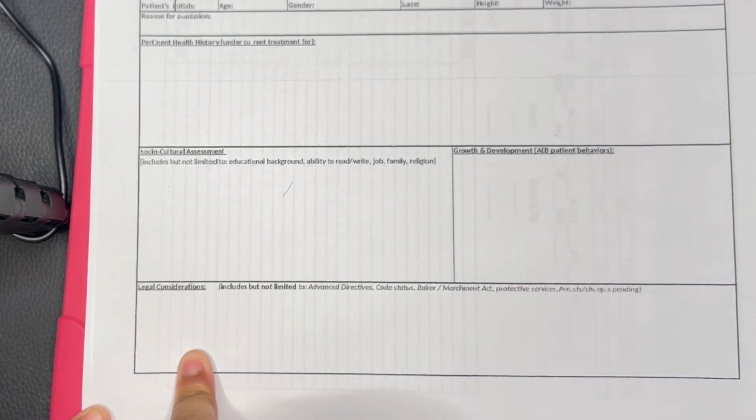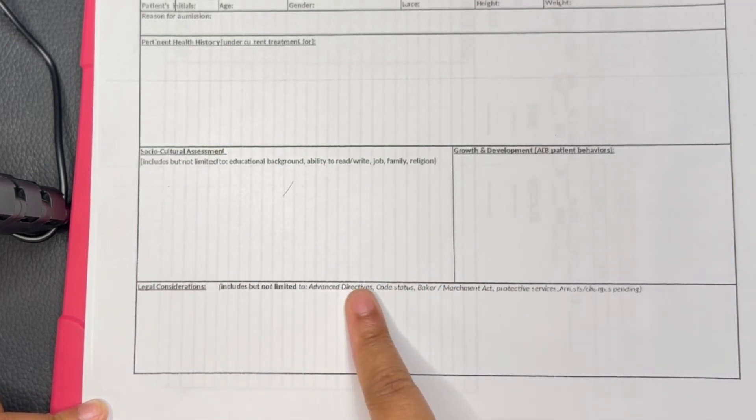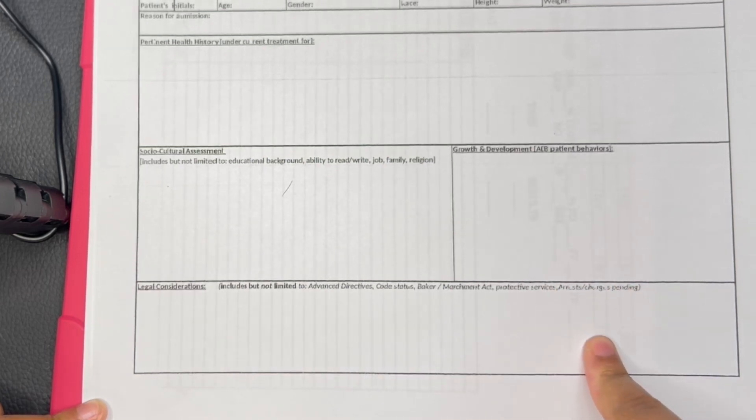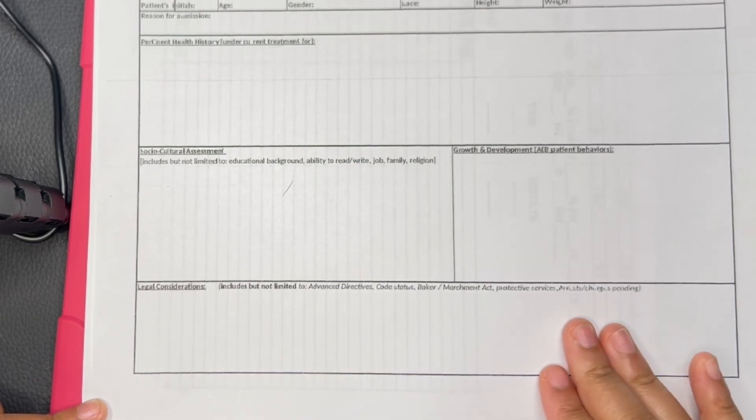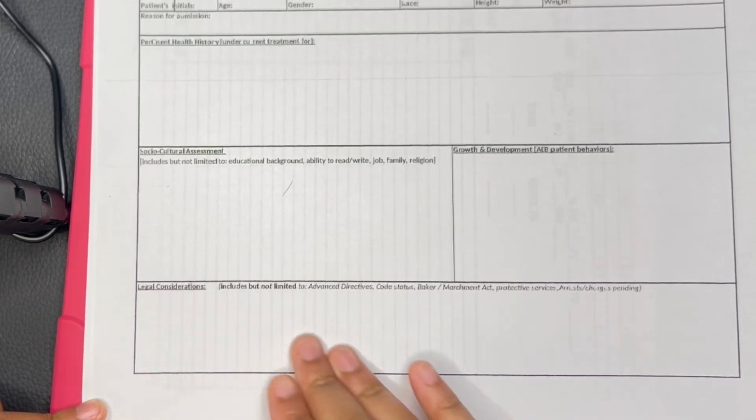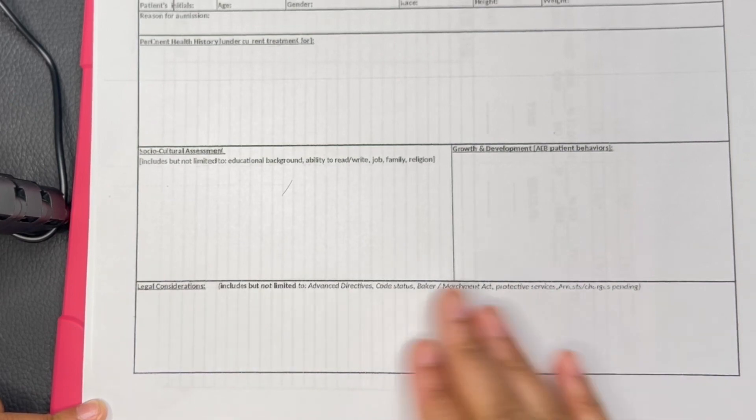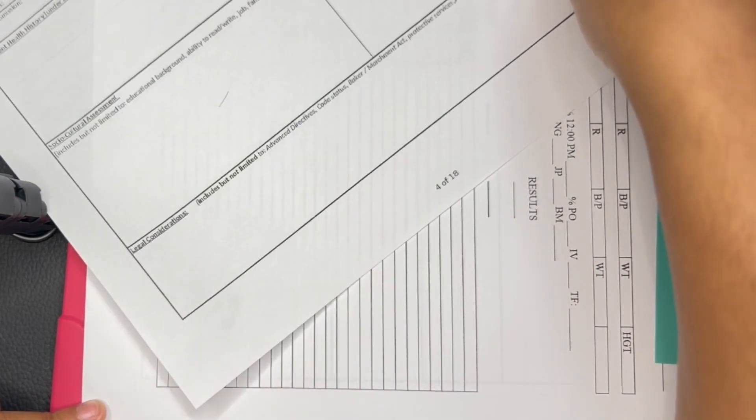As far as legal consideration, meaning like if they have any advanced directives, if they have a code status like if they're a full code, any protective services, any arrests or pending charges. Like if you have a patient that's an inmate, you will put that patient has been arrested, you know, and blah blah blah.